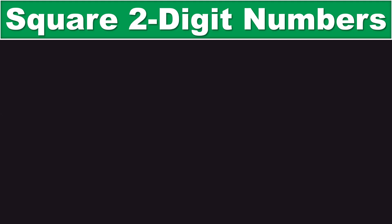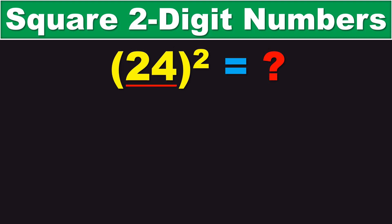Now, as you can see here, we have 24 squared, and this is the problem that we are trying to figure out. And the first step is figuring out what the nearest multiple of 10 to this number is. In this case, the nearest multiple of 10 to 24 is 20.